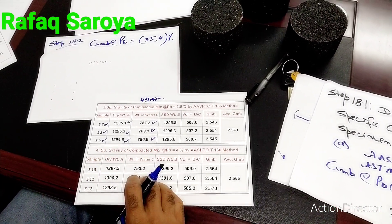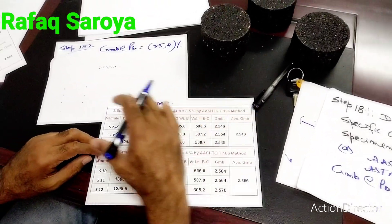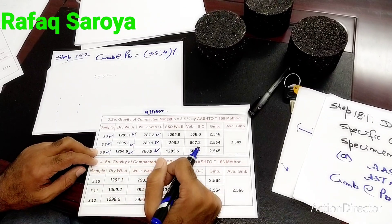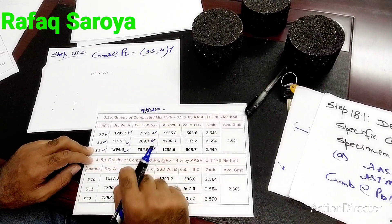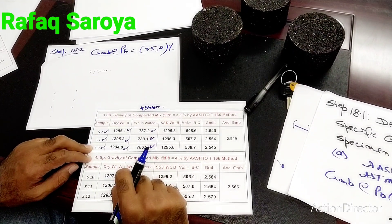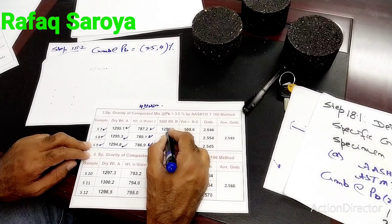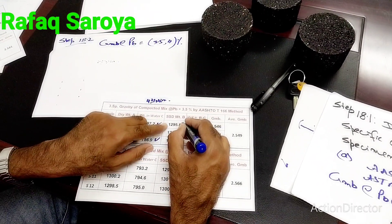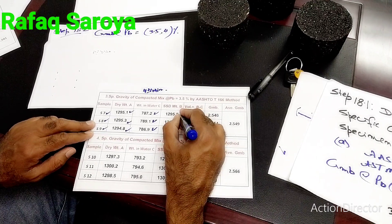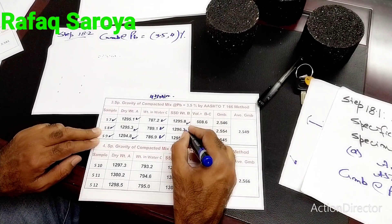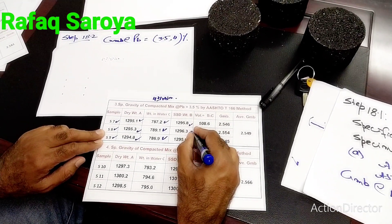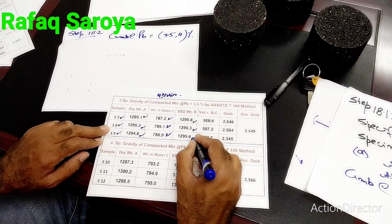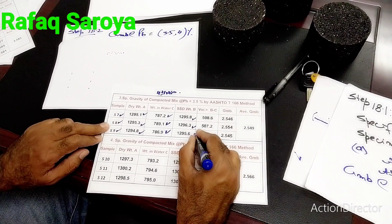Now we take out the samples and bring them into SSD (Saturated Surface Dry) condition. Once brought to SSD condition, we measure their SSD weights. For the first sample 1295.8, for the second sample 1296.3, and for the third sample 1295.6.